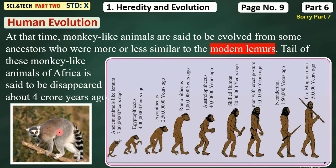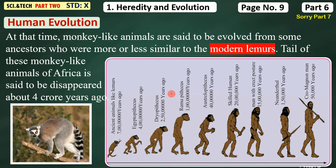These ancestors were similar to modern lemures. The tale — meaning the tail — of these monkey-like animals of Africa is said to have disappeared about 4 crore years ago. The monkey's tail disappeared before 4 crore years ago, and it was in Africa. The entire human evolution has been in Africa.